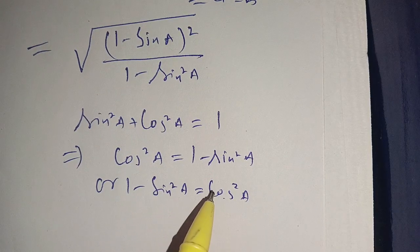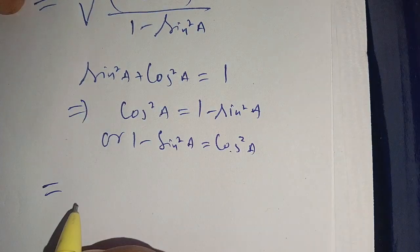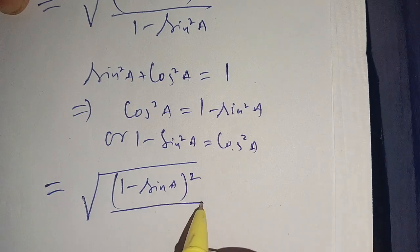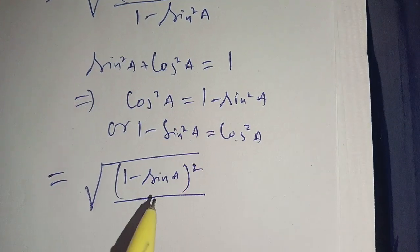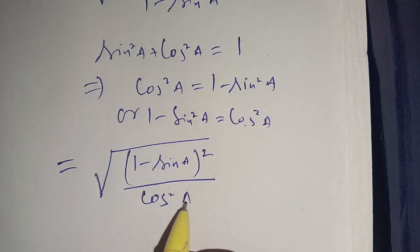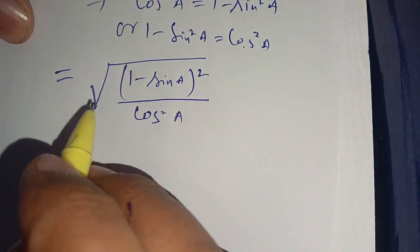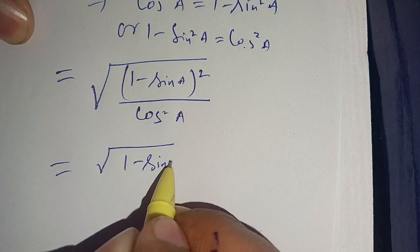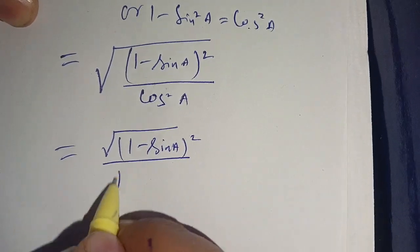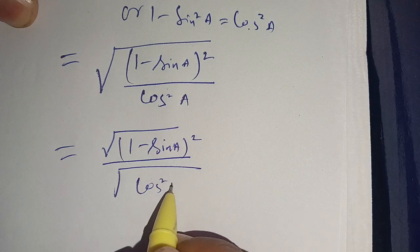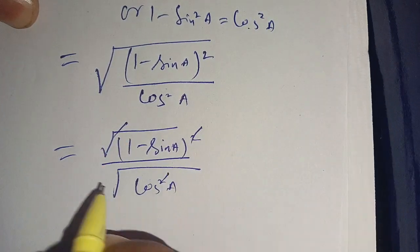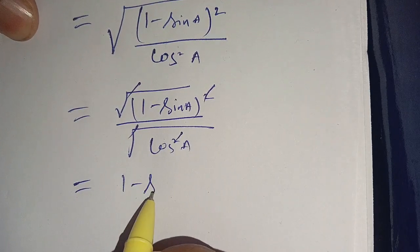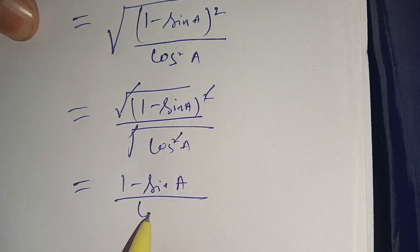In place of 1 minus sine squared a we substitute cos squared a. Our problem becomes the square root of (1 minus sine of a) whole square, divided by cos squared a. Taking the square root of both numerator and denominator, the squares cancel with the square roots, and it becomes (1 minus sine of a) divided by cos of a.